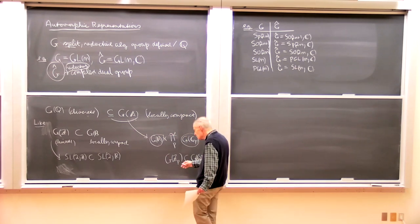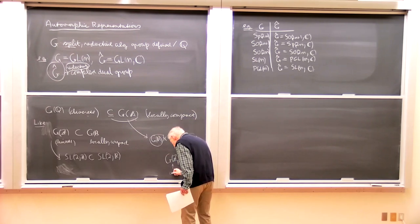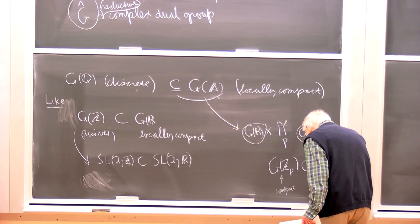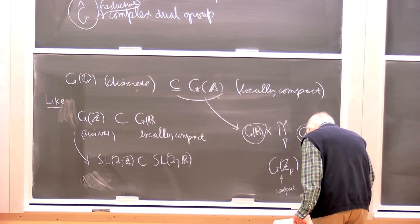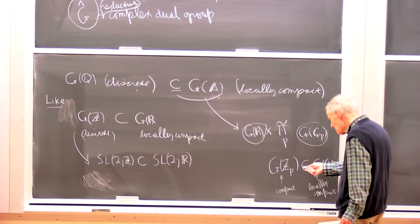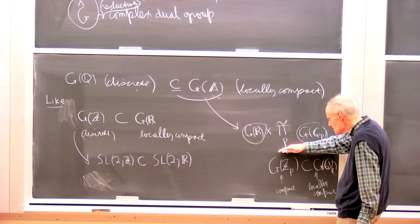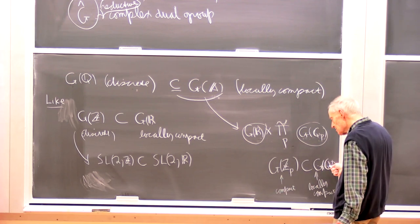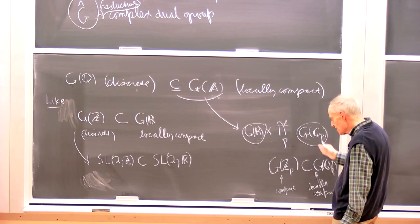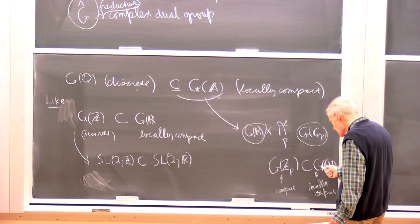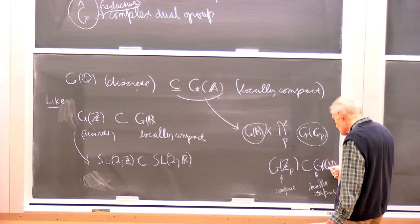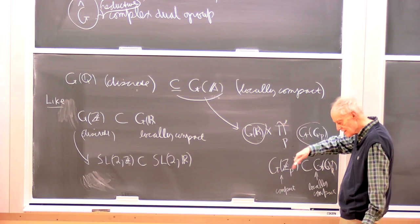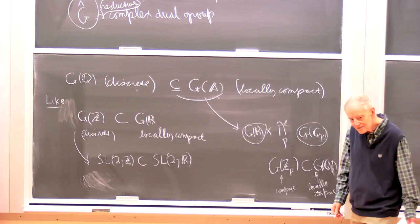The group of p-adic integers is a compact group, and G(A) is a locally compact group. Elements in G(A) consist of products over all p of elements in these groups G(Q_p), with the restriction that almost all components must lie in the maximal compact subgroup G(Z_p). This is the direct limit of these things, with a slightly stronger topology that makes it locally compact.